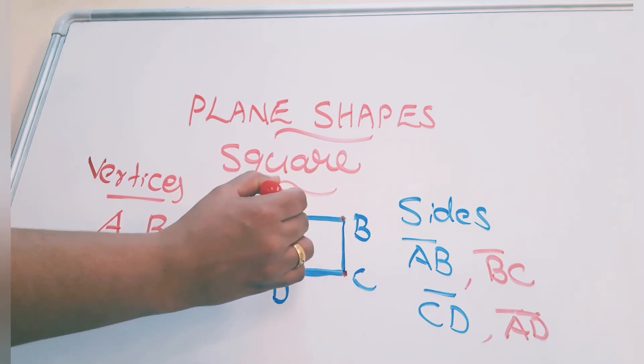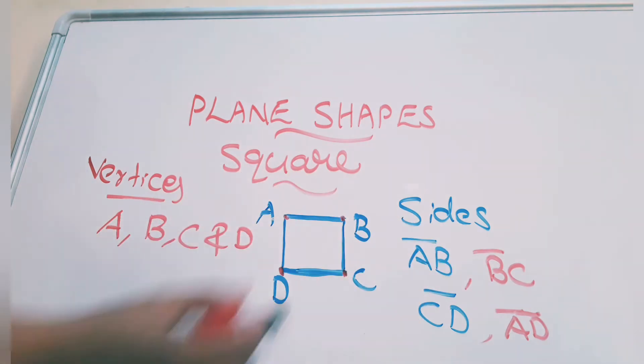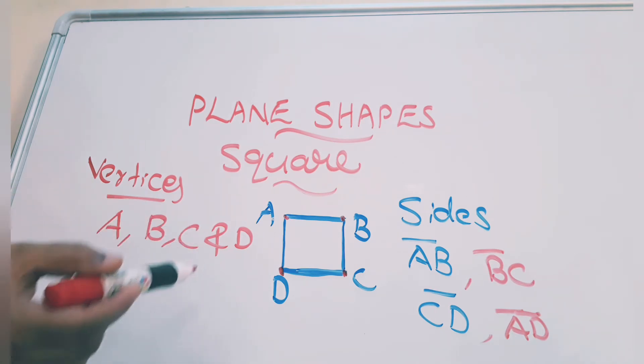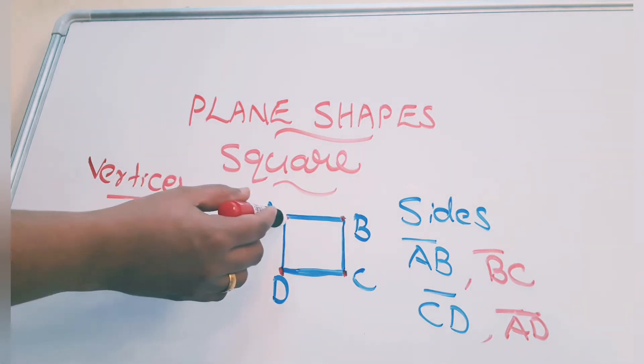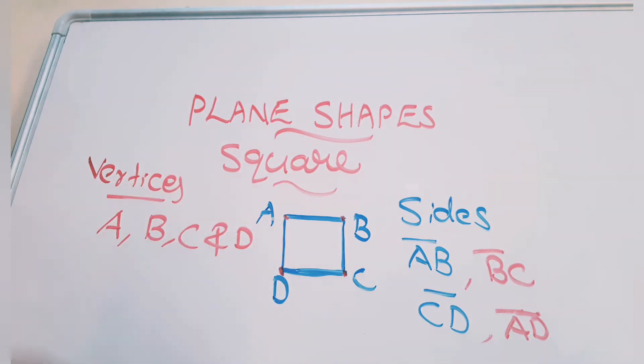So AB together we have to write, that is side. AB, BC, CD, DA are sides. A, B, C and D all are vertices or we can say corners. Vertex is the singular. Vertex A. If vertices means it is plural. A, B, C and D.